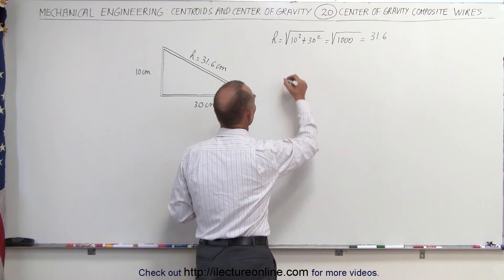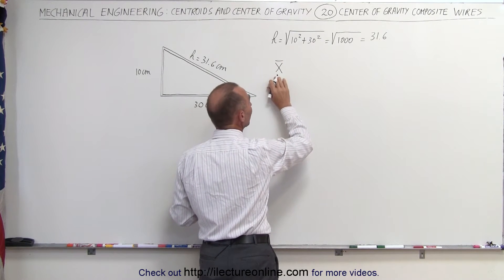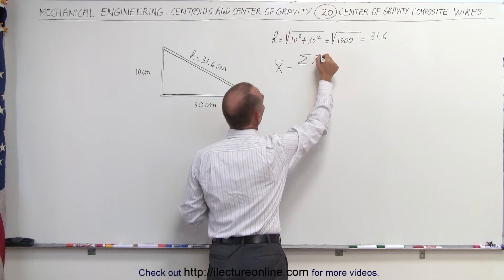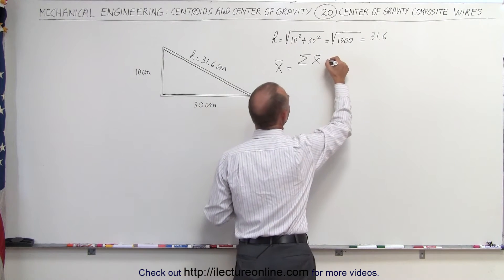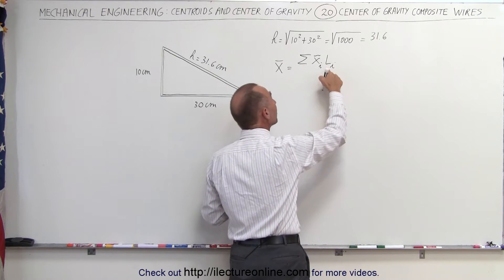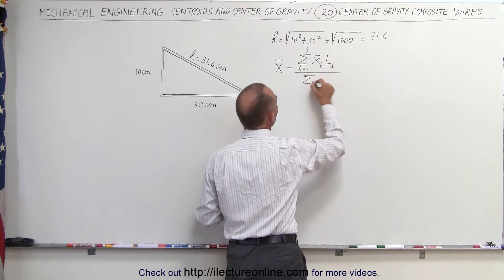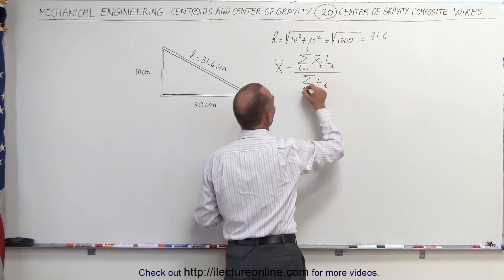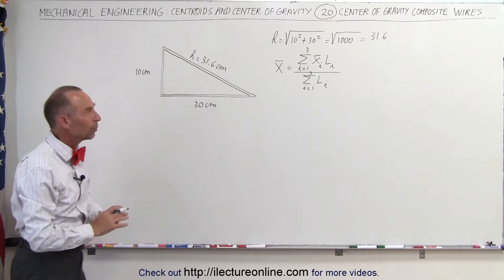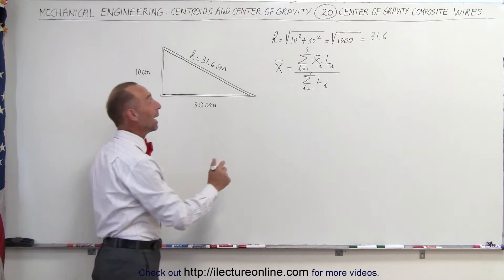So in the x-direction, the x-coordinate of the center of mass of the three wires joined together equals the sum of the x-coordinate of each wire piece multiplied by the length of that wire — summed from i equals one to three — divided by the sum of the lengths of all the wires, i equals one to three, just like we did with the area for a plate. Let's apply that methodology now to the wire system.